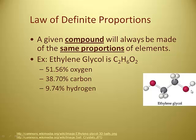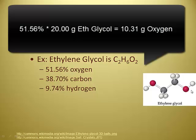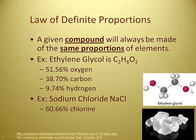We originally knew this because it was always 51.56% oxygen, 38.70% carbon, and 9.74% hydrogen. So if you have 20 grams of ethylene glycol, you multiply by 0.5156 to find the mass of oxygen. Sodium chloride NaCl is 60.66% chlorine and 39.44% sodium, always, no matter how much sample you have — one gram or 3,000 grams. That is the law of definite proportions.